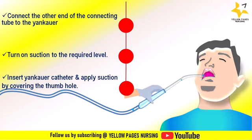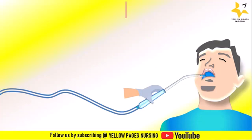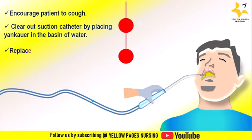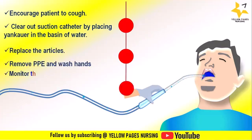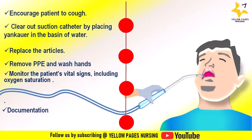Test the function by covering the hole on the Yankauer with your thumb or index finger over a small amount of saline. Insert the Yankauer catheter and apply suction by covering the vacuum control port with the thumb or index finger. Insert the catheter along the gum line to the pharynx in a circular motion, keeping the Yankauer moving. Encourage the patient to cough. Clear out the suction catheter by placing the Yankauer in a bowl of water. Replace the articles, remove PPE, wash hands, and monitor the patient's vital signs including oxygen saturation. Document the date, time, and pre- and post-respiratory status.